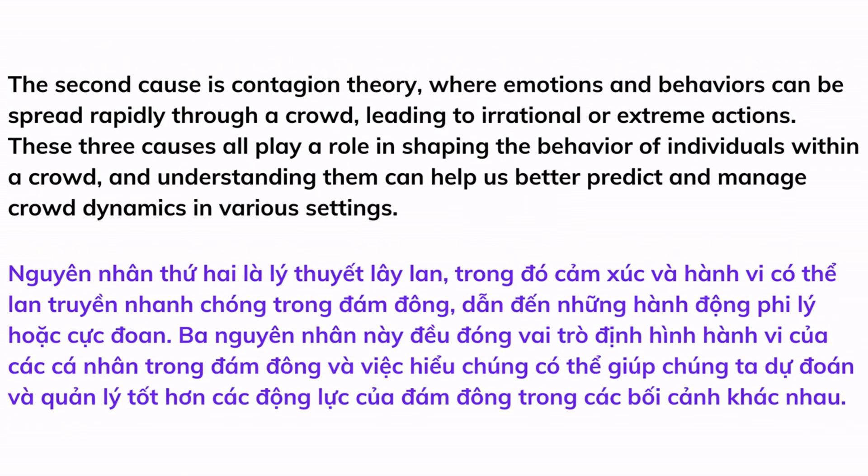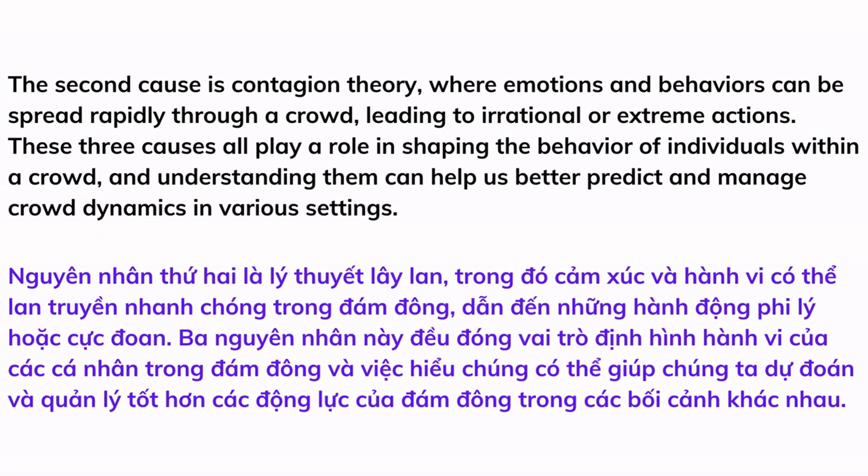The second cause is contagion theory, where emotions and behaviors can be spread rapidly through a crowd, leading to irrational or extreme actions. These three causes all play a role in shaping the behavior of individuals within a crowd, and understanding them can help us better predict and manage crowd dynamics in various settings.